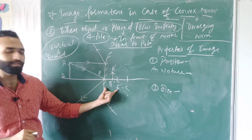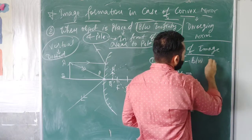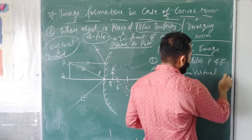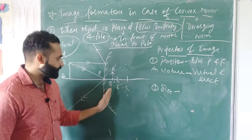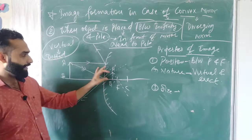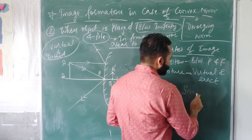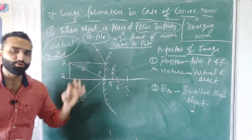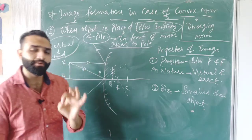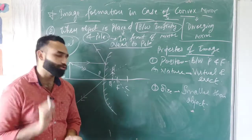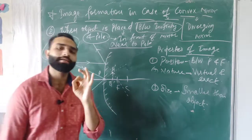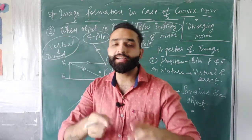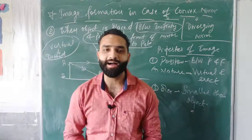Properties for Case 2: Position — between pole and focus. Nature — virtual and erect, because the image is upright. Size — it is smaller than the object. In the case of convex mirror, the image always forms with small size. Please note it down. That's all for today. Please share this video with your friends, stay safe, stay healthy, and I will see you in the next video.